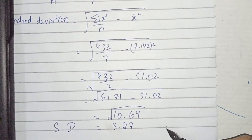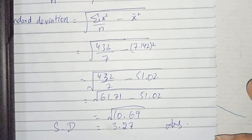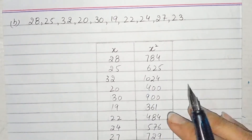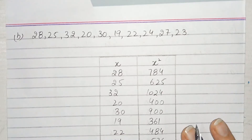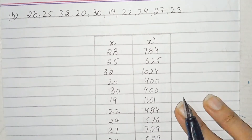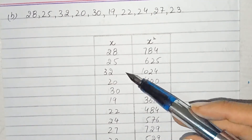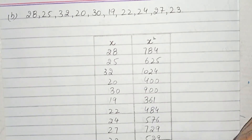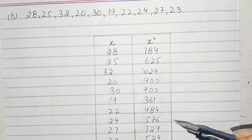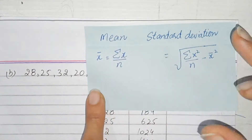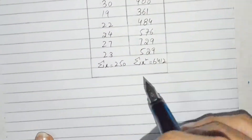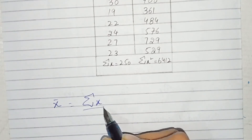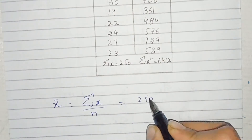Part B is the same type of problem — ungrouped data is provided. I write the values of x in one column and x squared in another. The formula is the same. Mean = sigma x / n. Sigma x = 250 and the total number of values is 10, so mean = 250 / 10 = 25.